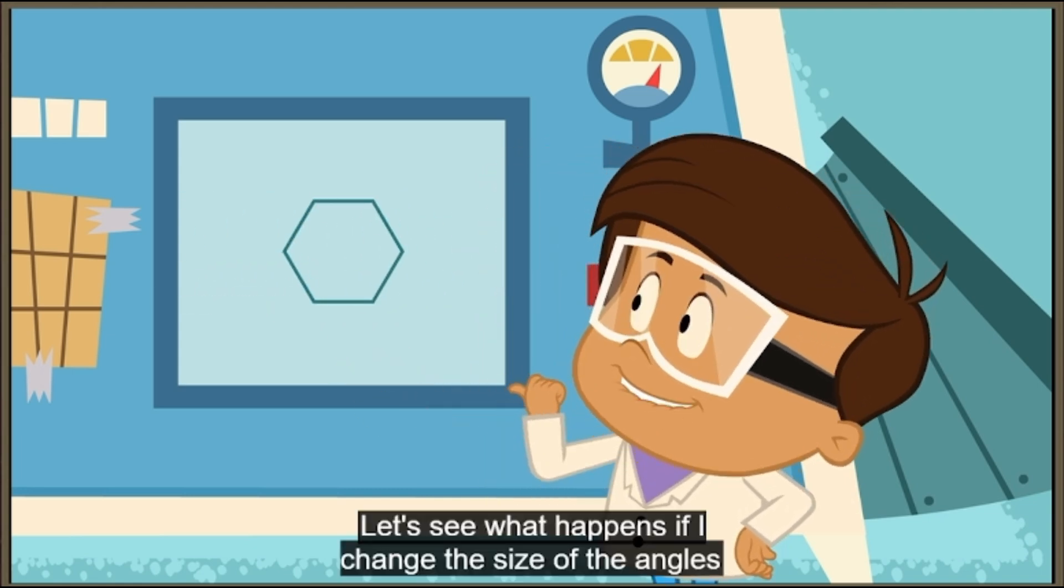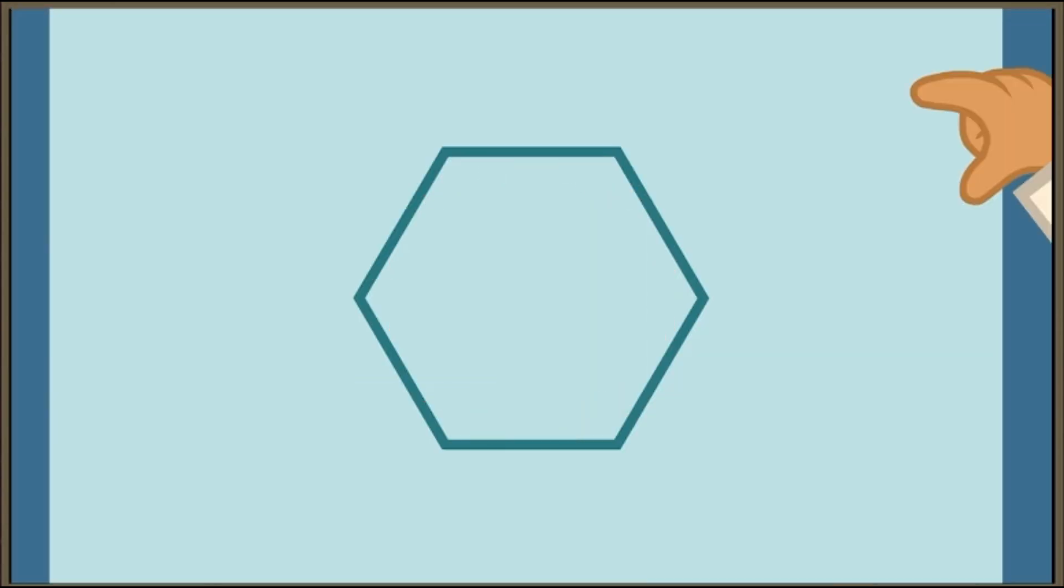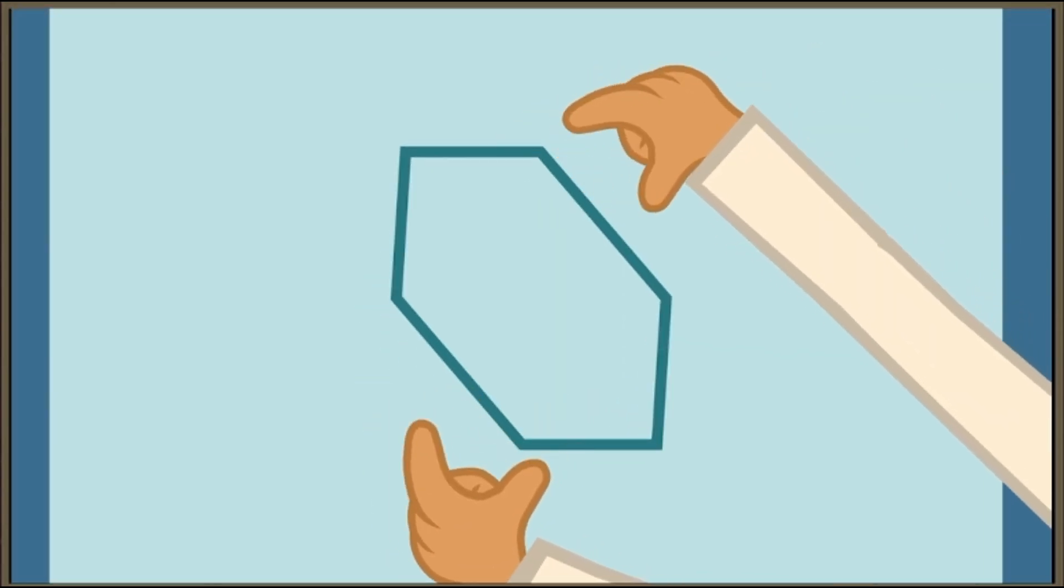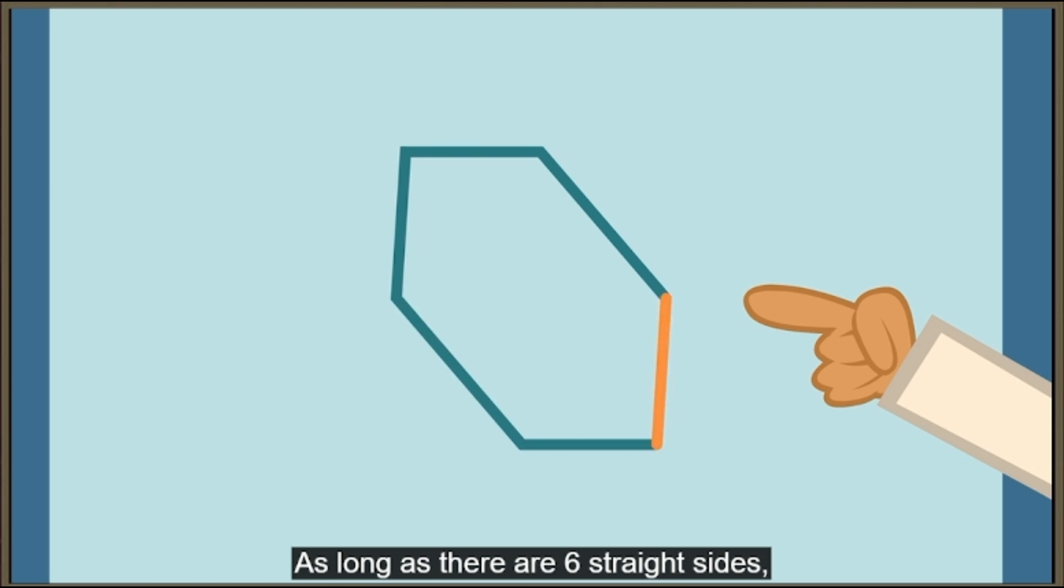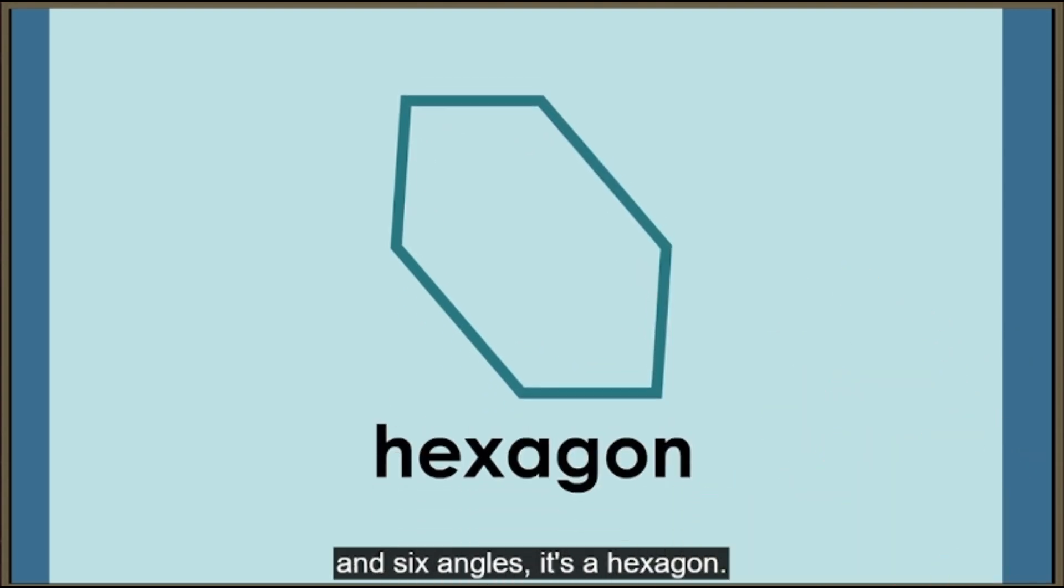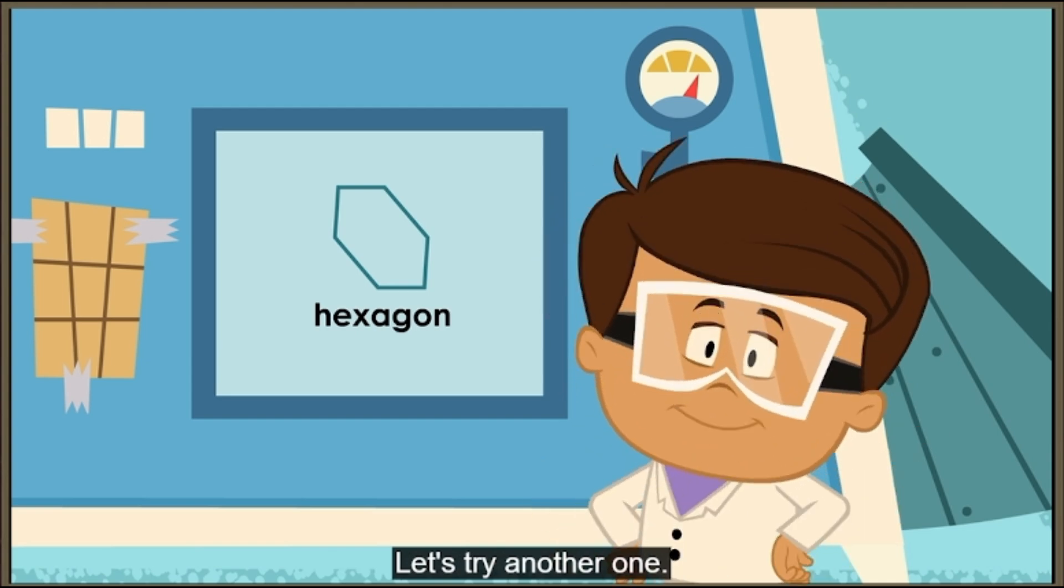Let's see what happens if I change the size of the angles of this hexagon. As long as there are six straight sides and six angles, it's a hexagon. Let's try another one.